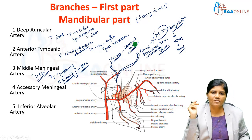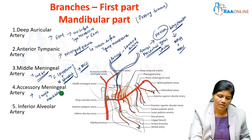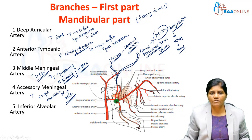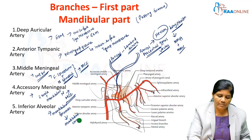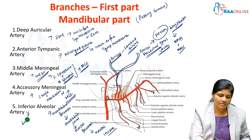The middle meningeal artery supplies the posterior as well as the middle cranial fossa. The accessory middle meningeal artery passes through the foramen ovale along with the mandibular nerve and supplies the dura and structures in the middle cranial fossa. The inferior alveolar artery descends from the inferior border of the lateral pterygoid, passes through the mandibular foramen, travels through the mandibular canal, exits at the mental foramen, and gives two terminal branches: the mental branch and the incisive branch. Before entering the mandibular foramen, it gives off a lingual branch accompanying the lingual nerve, and a mylohyoid branch.